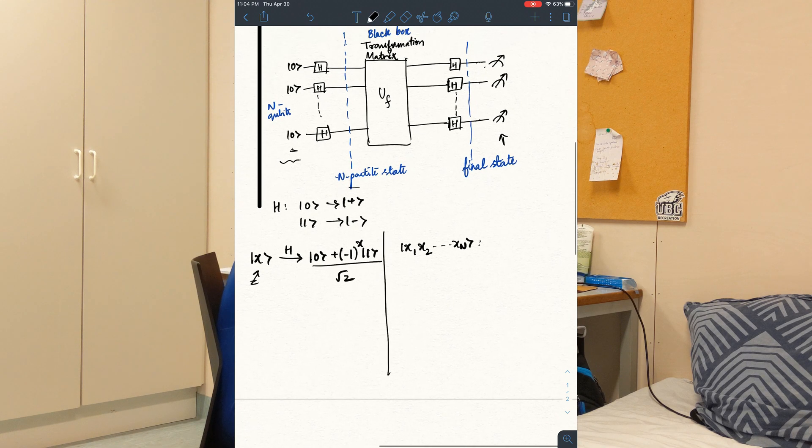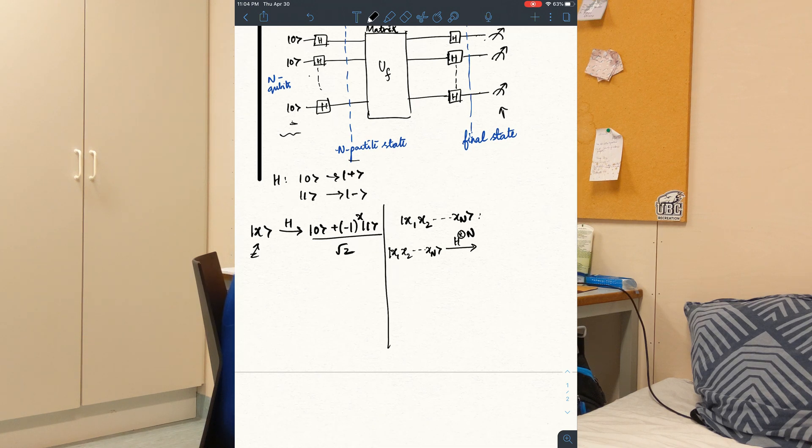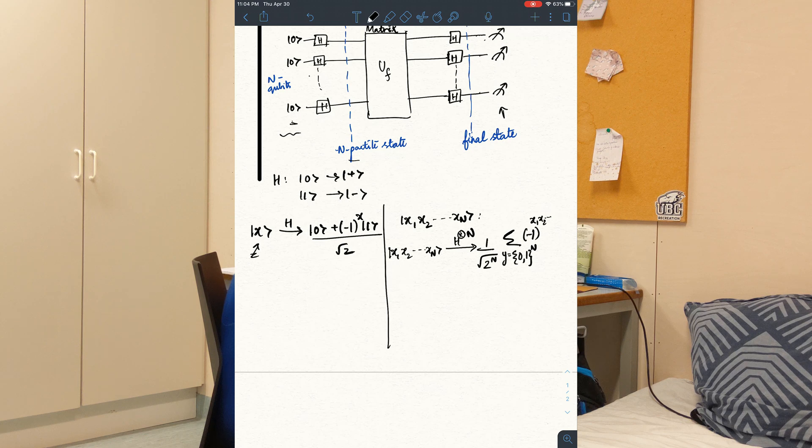When we apply a Hadamard gate on this state, which is meant to act on all the n qubits, we end up with this state. So the y takes us through all the possible values of all the states that we have. And then minus 1 power our string, input string that we have, times the state that we want. And all of this is the coefficient of this state.